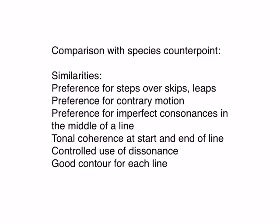There's a preference for contrary motion between the lines. We also like to have those imperfect consonances—remember those were thirds and sixths in the middle of a line. We would like the line to express the tonality at the beginning and end of the line. We can use some dissonance, but in a controlled way.